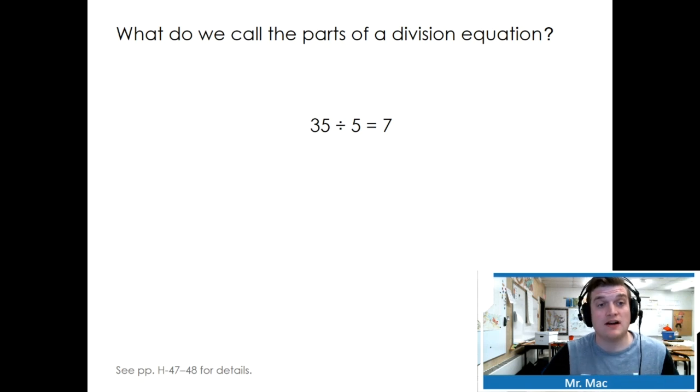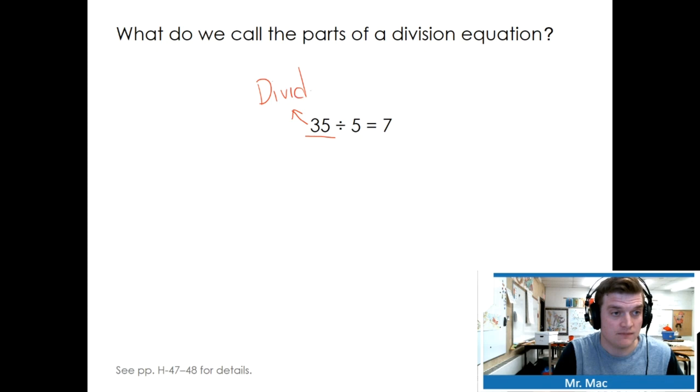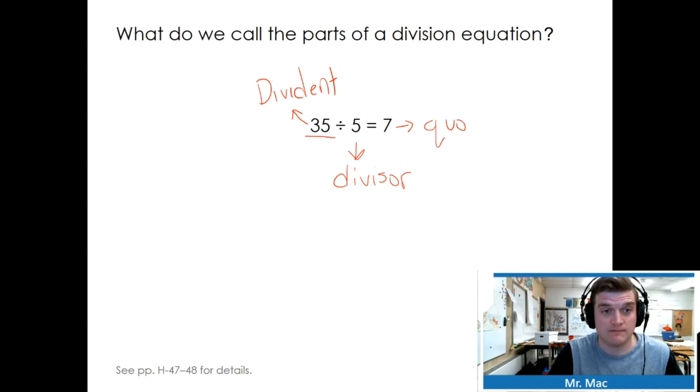What do we call the parts of a division equation? Well, we've got our total, and this is called a dividend. We've got the number that we're dividing by. We call it the divisor. And then we've got our answer, which is the quotient.